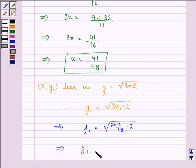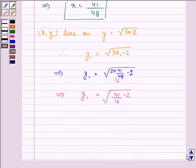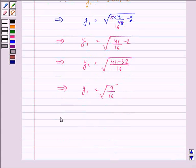We have y1 equal to under root 41 upon 16 minus 2. 41 minus 32 upon 16 gives us under root 9 upon 16, which gives us the value of y1 either to be plus 3 by 4 or minus 3 by 4.